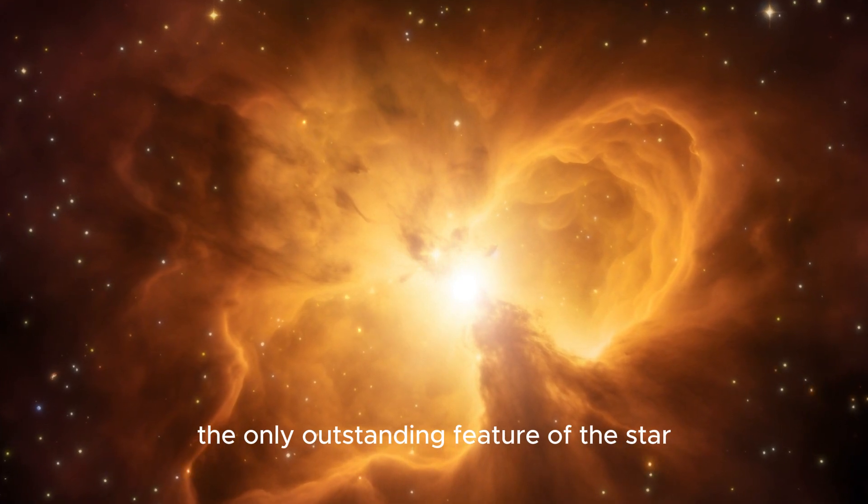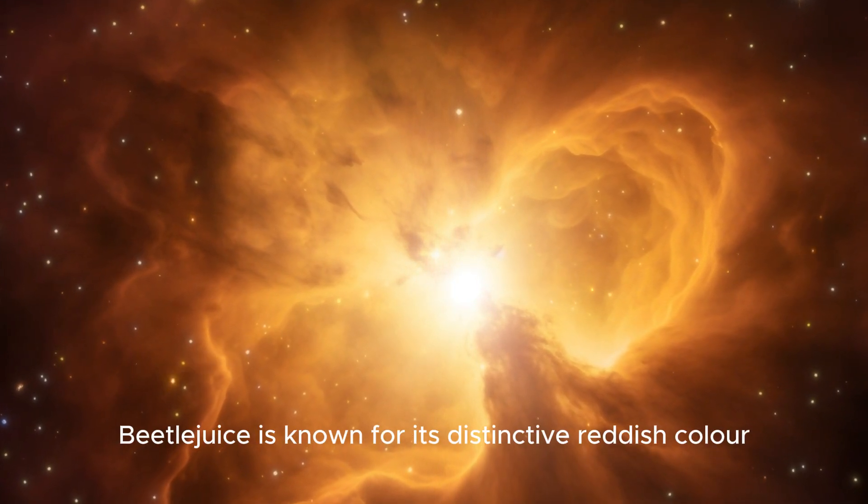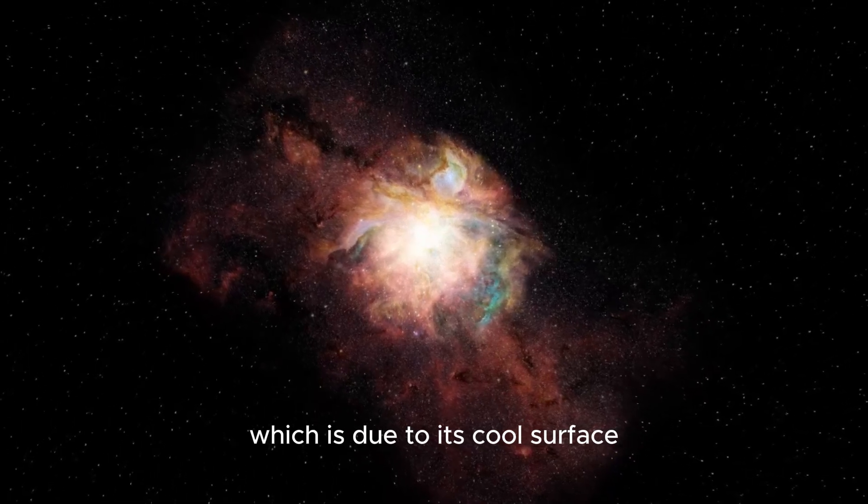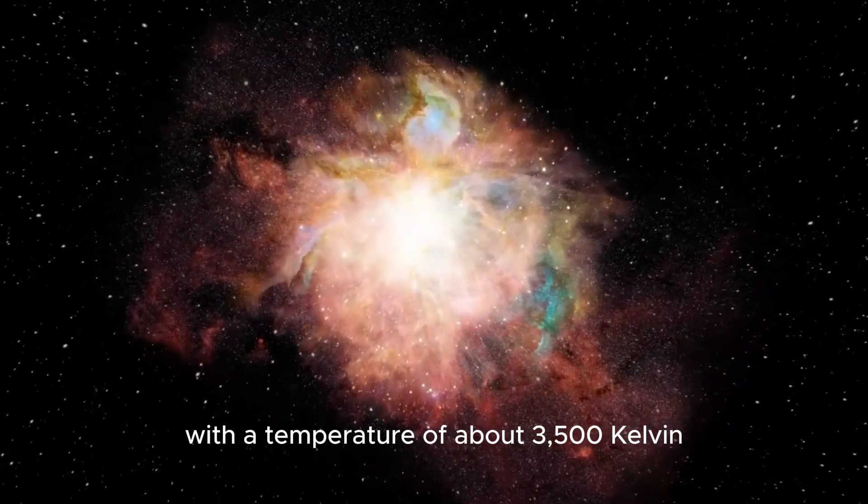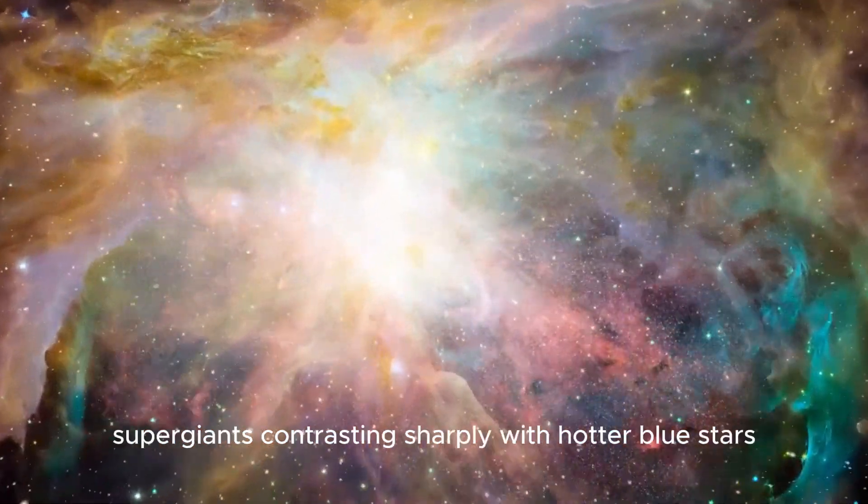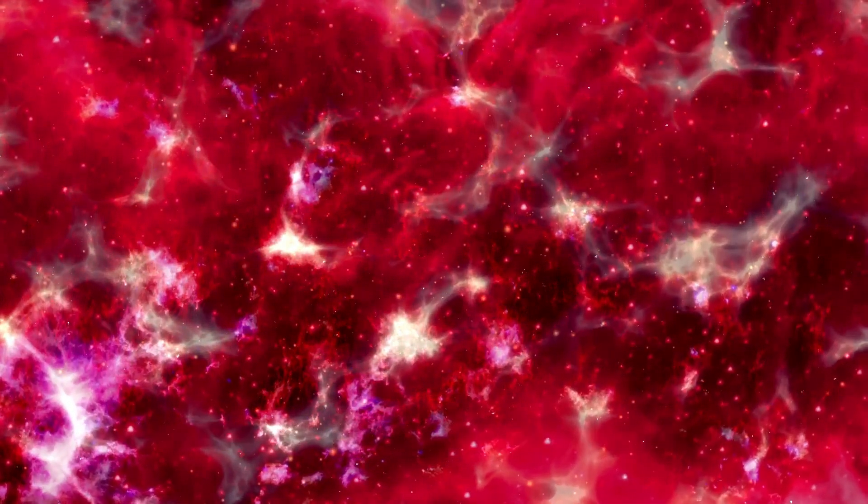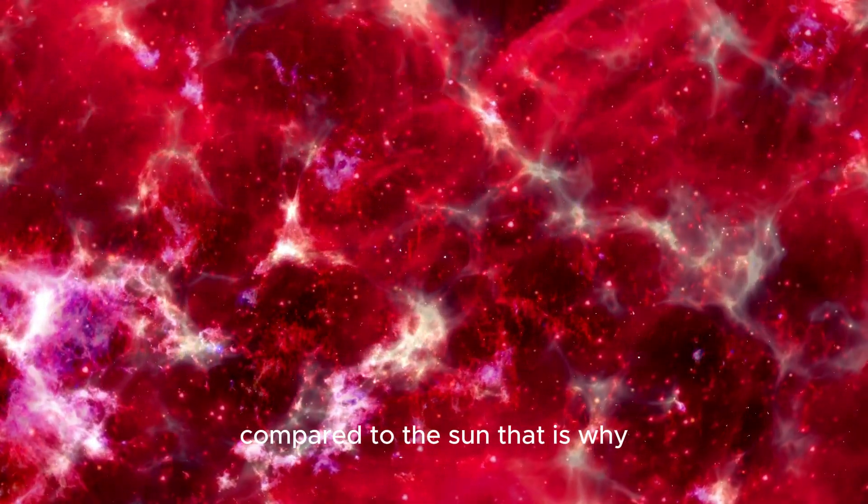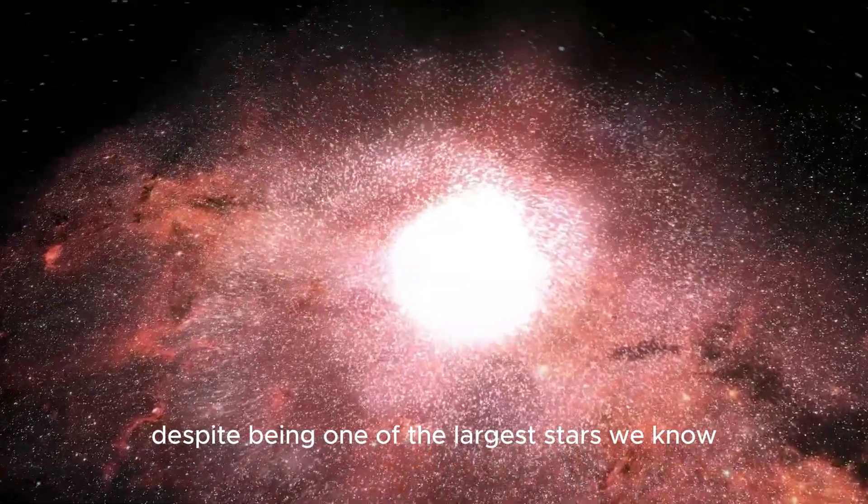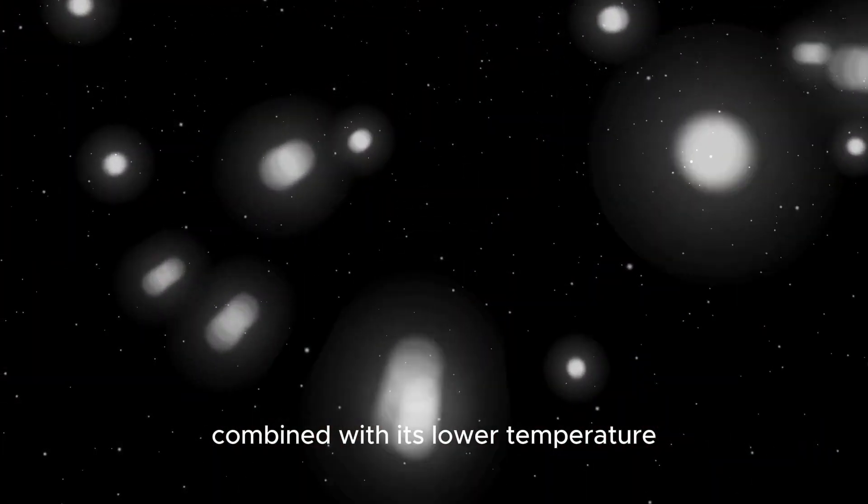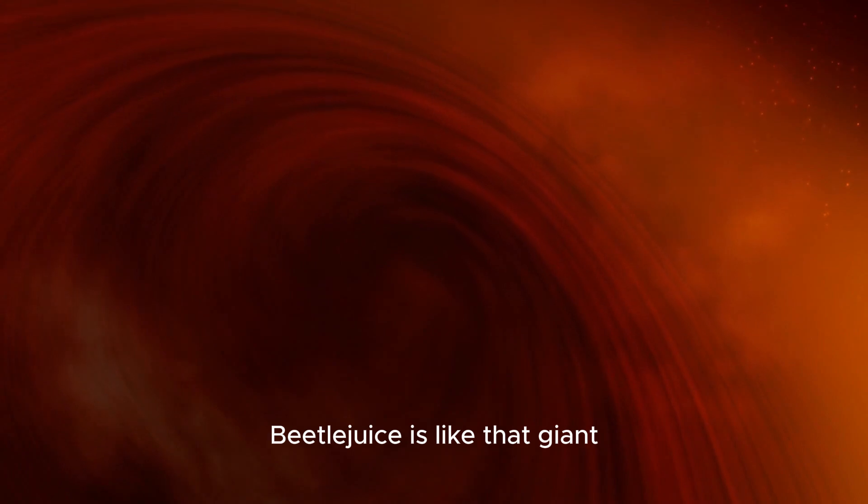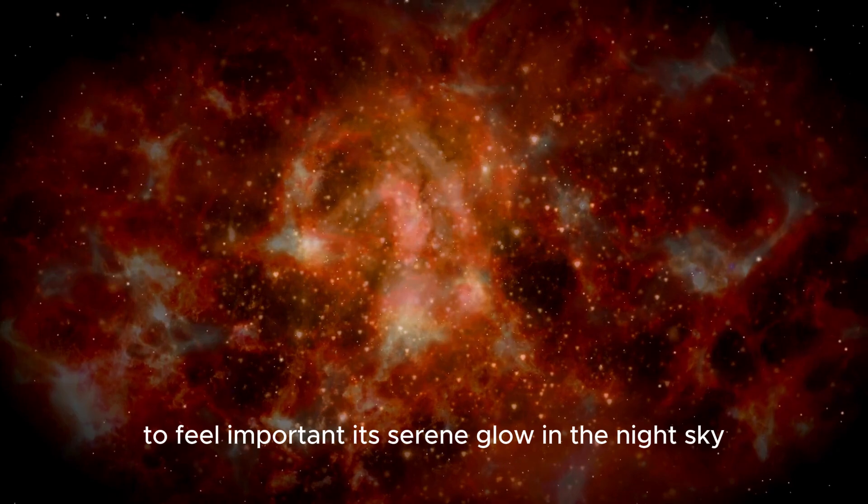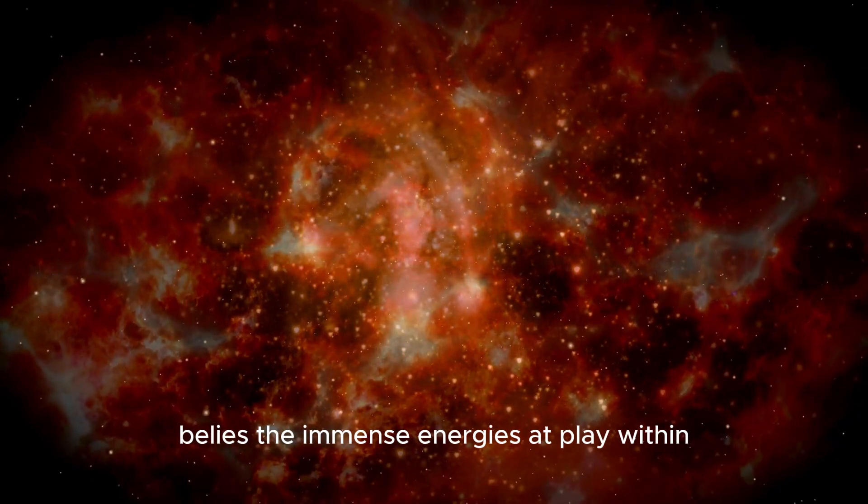Brightness is not the only outstanding feature of the star. Betelgeuse is known for its distinctive reddish color, which is due to its cool surface with a temperature of about 3,500 Kelvin. This cooler temperature is a hallmark of red supergiants, contrasting sharply with hotter blue stars. This lower temperature means that Betelgeuse emits much less energy per unit area compared to the sun. That is why, despite being one of the largest stars we know, it appears much dimmer. The vast size of Betelgeuse, combined with its lower temperature, gives it its characteristic reddish hue. Betelgeuse is like that giant who is satisfied with a low profile and doesn't need to show off its size to feel important. Its serene glow in the night sky belies the immense energies at play within.